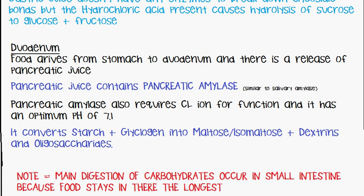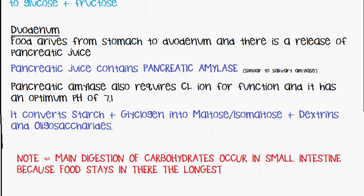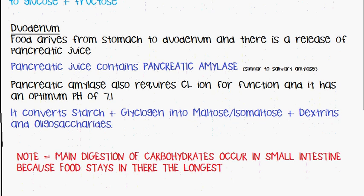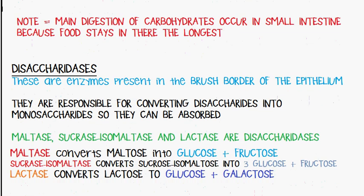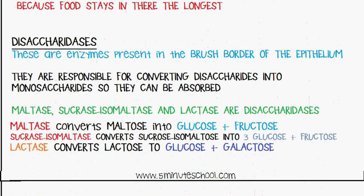The main digestion of carbohydrates occurs in the small intestine because the food stays there the longest. Disaccharidases are present in the brush border of the epithelium and are responsible for converting disaccharides into monosaccharides so they can be absorbed. Maltase converts maltose into glucose and fructose. Sucrase-isomaltase converts sucrose and isomaltose into 3 glucose and 1 fructose. Lactase converts lactose to glucose and galactose.